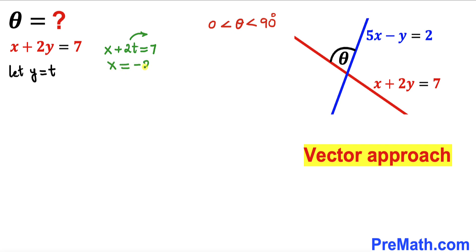negative 2 times t plus 7. So therefore x is going to be equal to negative 2t plus 7, as you can see over here.